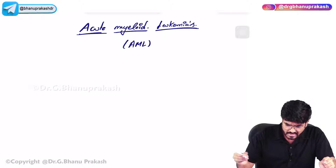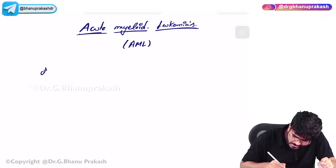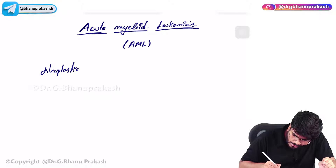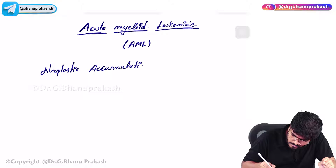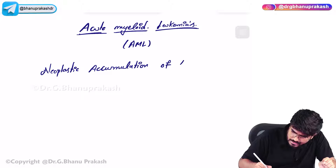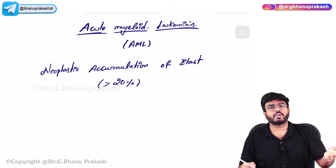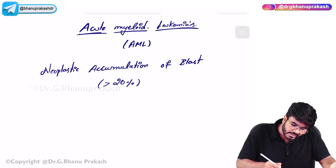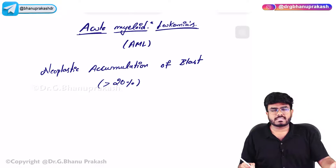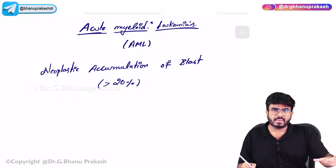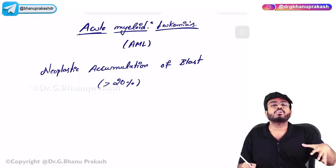What exactly is AML? It's the neoplastic accumulation of blasts - more than 20%. Which blasts? Myeloid blasts. The myeloid blasts or myeloblasts are getting accumulated within the bone marrow.